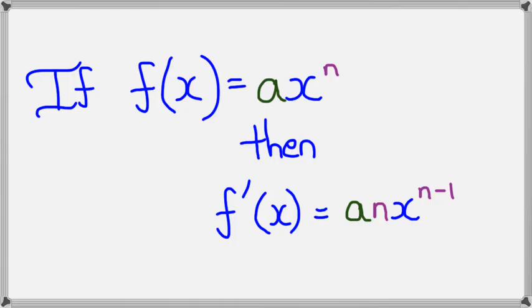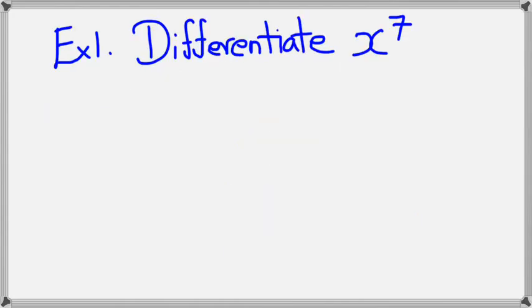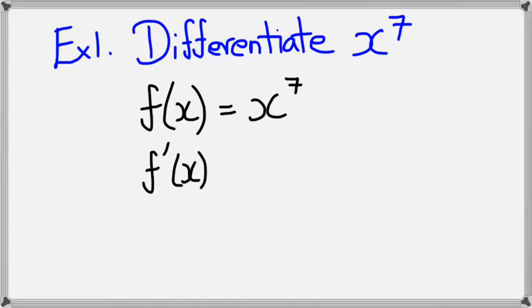So here's a quick example: differentiate x to the power of 7. We have f(x) is equal to x to the power of 7, which means f'(x) equals—we know we've got to bring the power down, so it'll be 7x to the power of 7, and we have to take away 1 from the power.